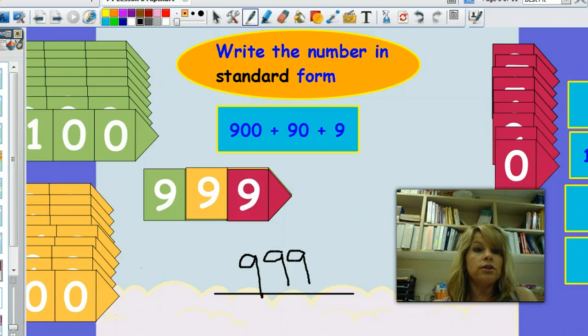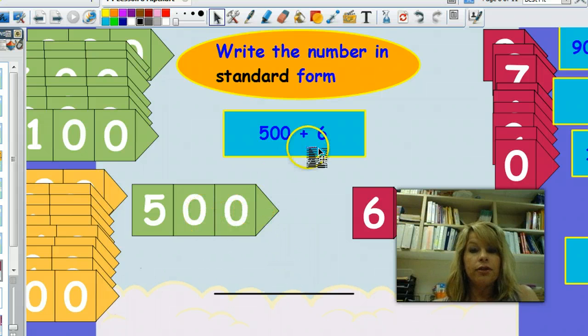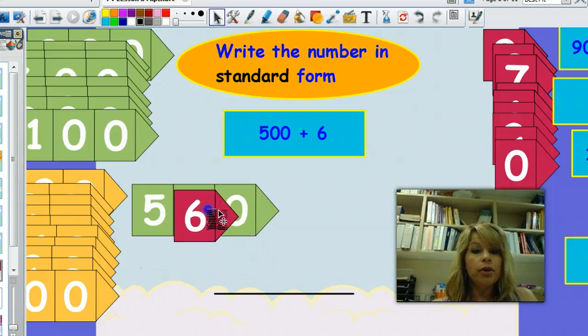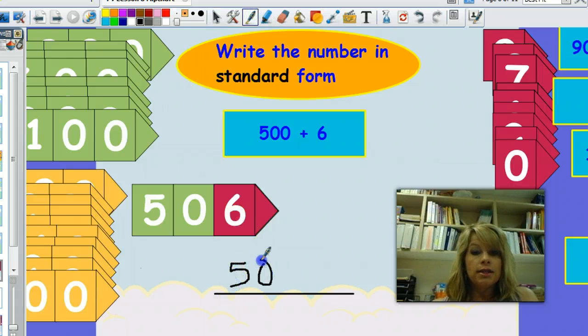Let's try one challenge. I want you to take out your place value cards for 500 and 6, and then write the number in standard form. Press pause to work. Press play when you're ready to check. So here are my arrow cards for 500 and 6. I have to be careful about this. If I put it here, it looks like I have 560, but my arrows don't line up, so I need to move this right over here. So the number that I've made with my arrow cards is 506.